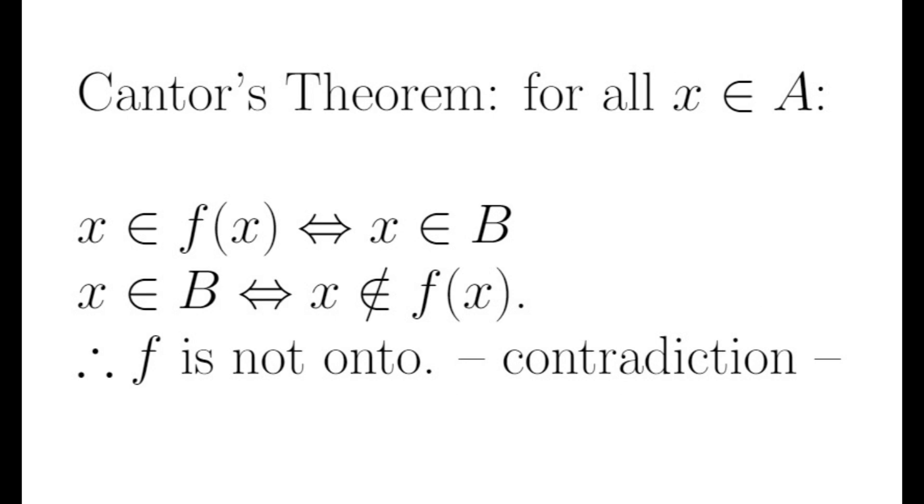Now consider any X in A, that either X is in its image, or X is not in its image. In the first case, F cannot equal B because X is in F by assumption, and X is not in B by the construction of B. This implies that F is not onto, which is a contradiction.